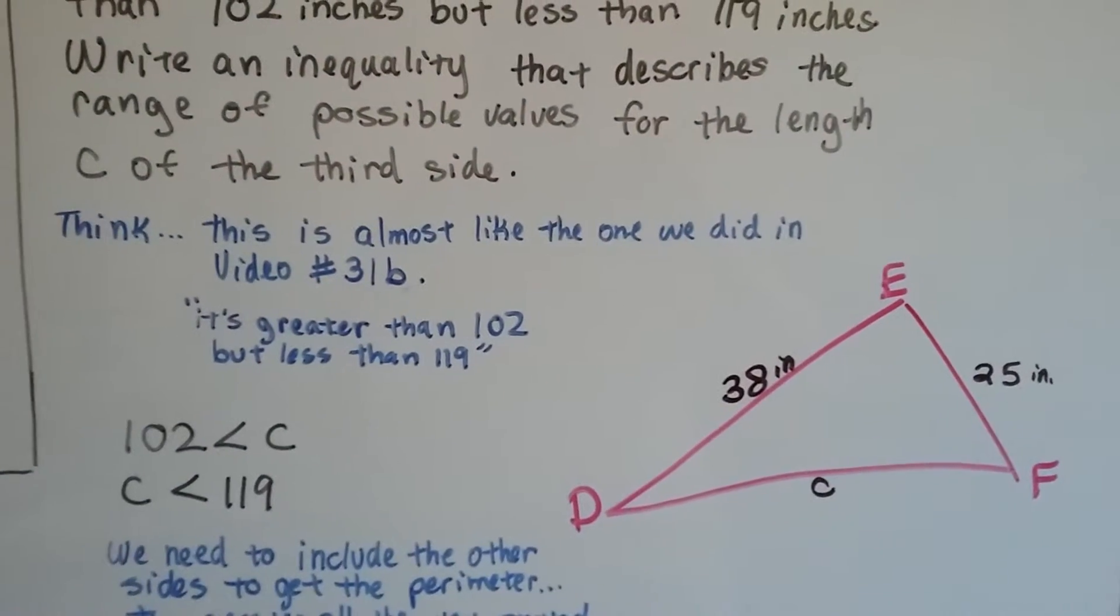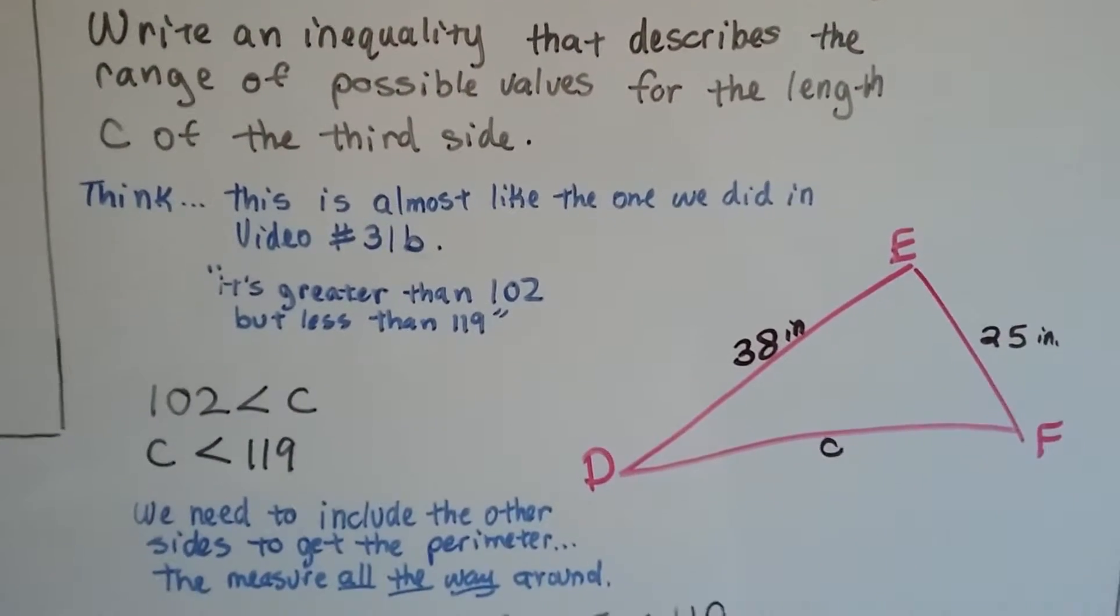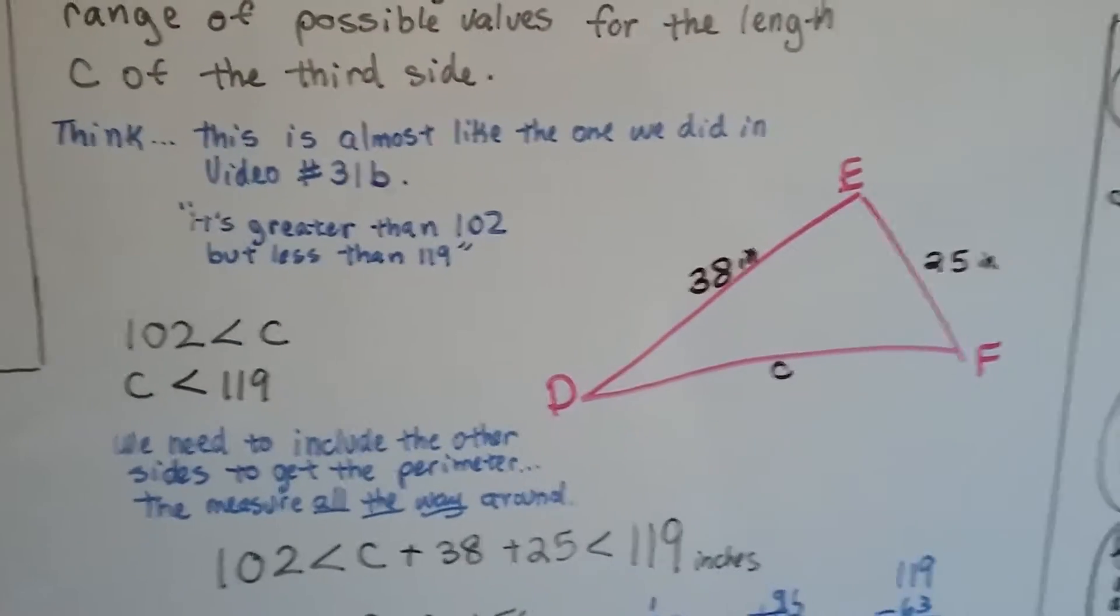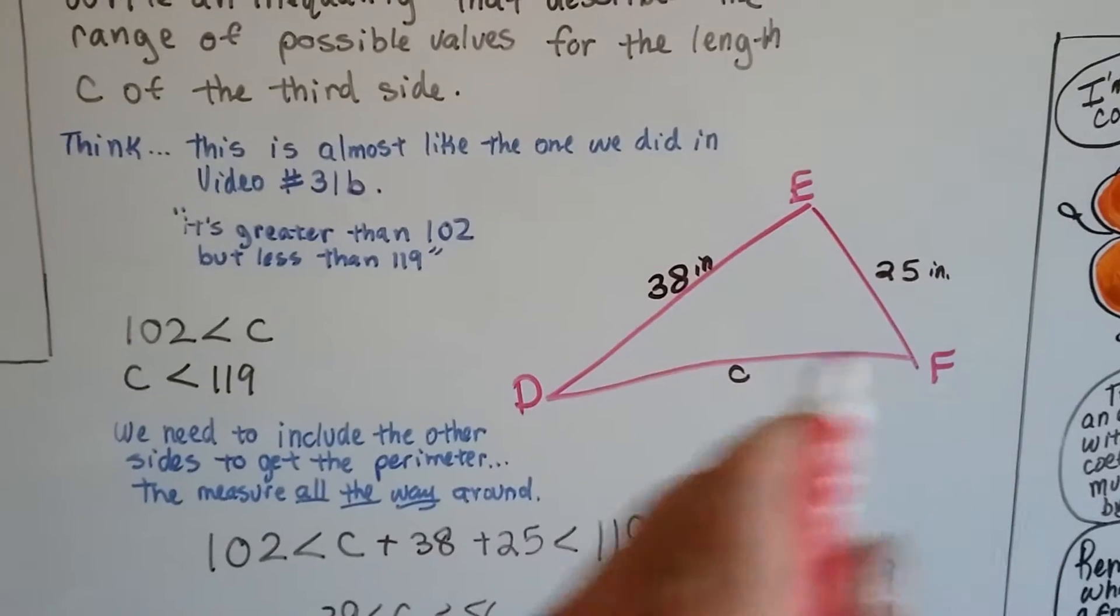Think, this is just almost like the one we did in video number 31B, isn't it? It's greater than 102, but less than 119. So here's DEF, our triangle. Here's side C.